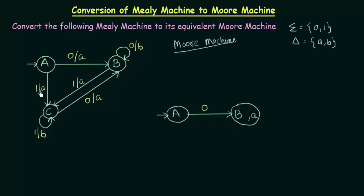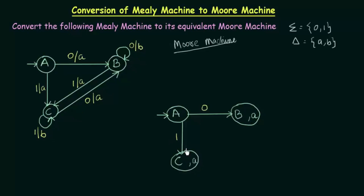On getting input 1, state A goes to state C and the output it gives is A. Since it is going to state C, I will associate this output A to state C. We have now completed the transitions for state A.